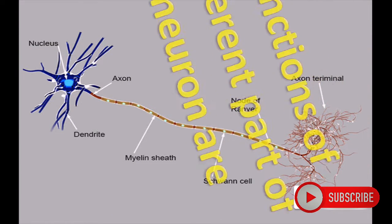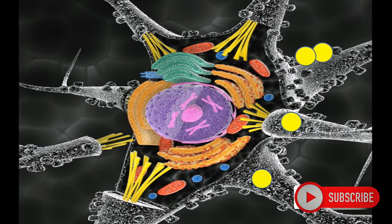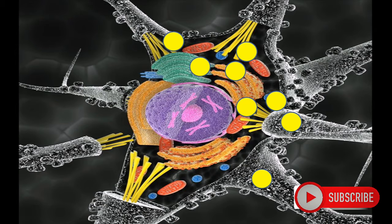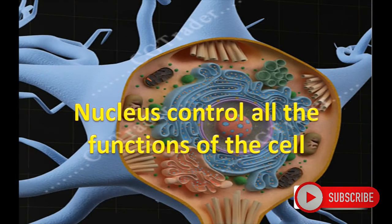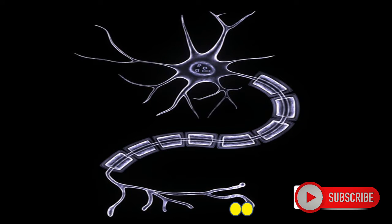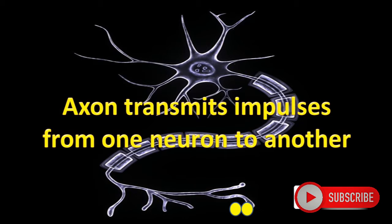The functions of the different parts of a neuron are: dendrites collect impulses from muscles and bring them to the cell body or nucleus. The nucleus controls all the functions of the cell. The axon transmits impulses from one neuron to another.